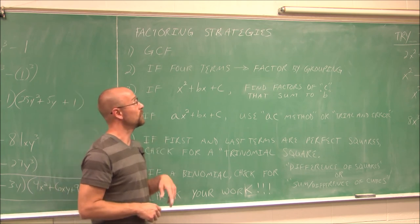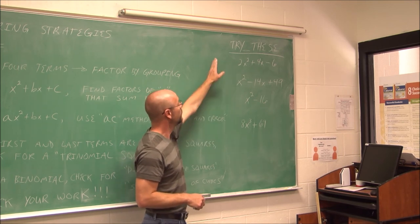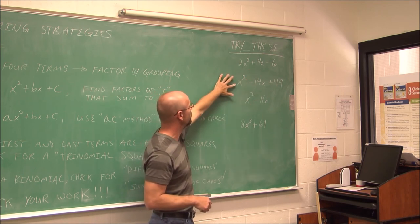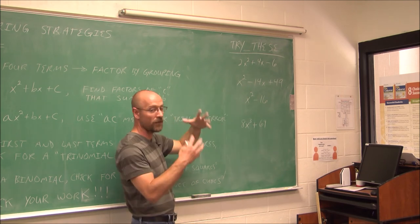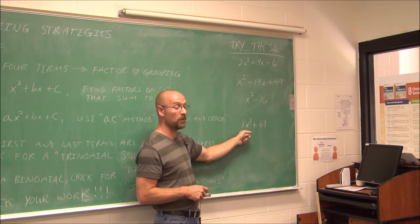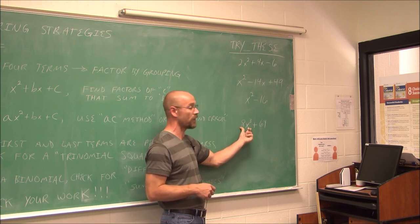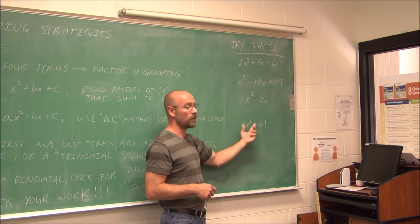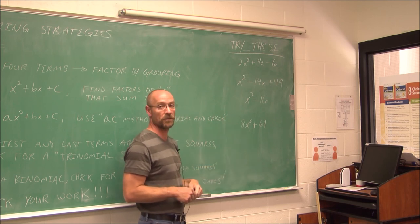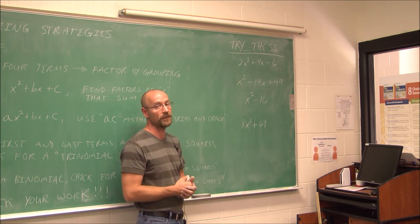For practice, try these four problems on your own. One involves the form ax² + bx + c. Another is x² - 14x + 49. Use the methods we covered. For the last one involving 8 and 64, notice that both are perfect cubes — factor something out first to make the coefficients smaller. Go ahead and try those four on your own. Good luck, and thank you for watching.